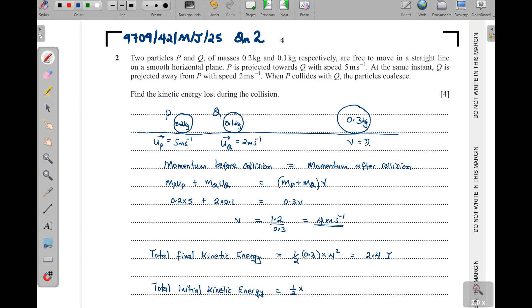Now, for P, it's a half times its mass is 0.2, then times the speed is 5, then squared. Then plus for Q, it is a half times the mass is 0.1, then the speed is 2 squared.